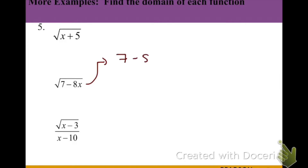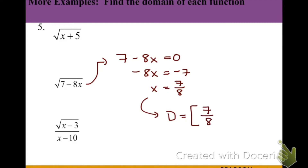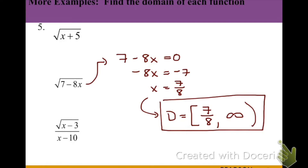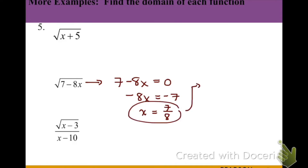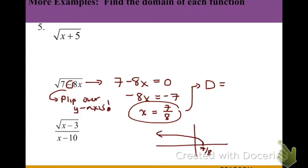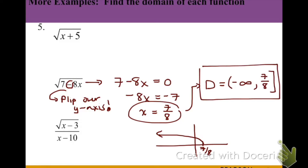In our next example, we similarly set the inside equal to zero and solve: subtracting 7 and dividing by negative 8 gives us 7 eighths. We might expect the domain to be from 7 eighths to infinity, but we need to consider transformations. Since there's a negative on the x term, that flips the graph over the y-axis, making it go out to the left. So the domain actually goes from negative infinity up to 7 eighths — a bracket on 7 eighths going all the way to the left.